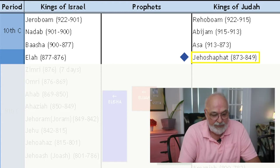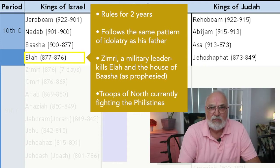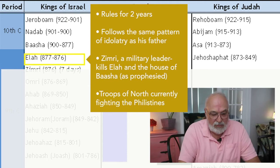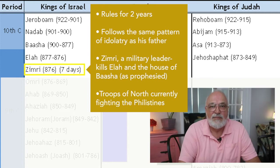Basha dies and Elah, his son, rules for about two years. Because he follows the same policies of Jeroboam, bringing idolatry into the northern kingdom, his dynasty — the dynasty of his father Basha — will also be eliminated. Zimri, who is a military leader, kills Elah, and then, as prophesied, goes and kills the whole house of Basha.